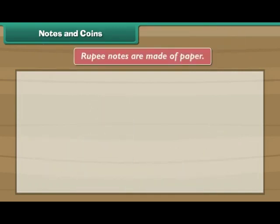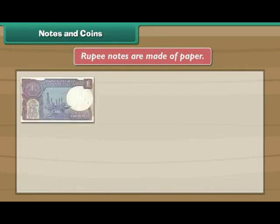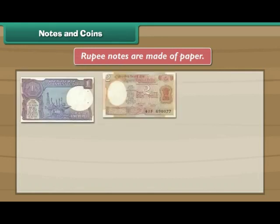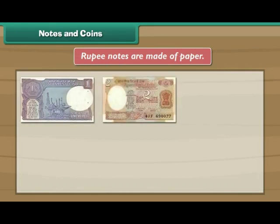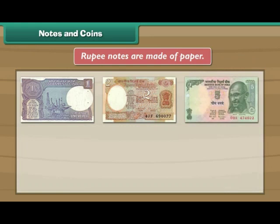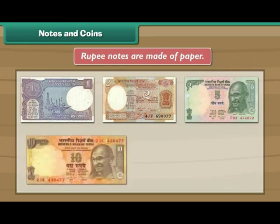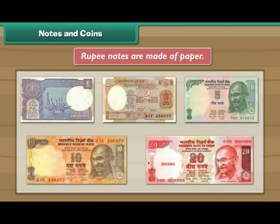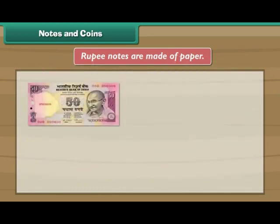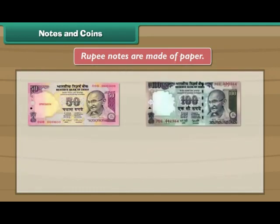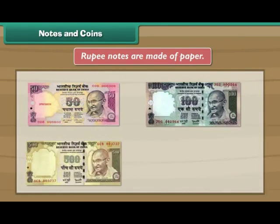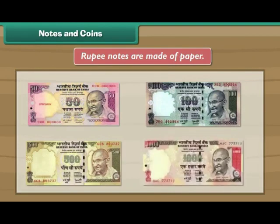Rupee notes are made of paper. There are 1, 2, 5, 10, 20, 50, 100, 500 and 1000 rupee notes.